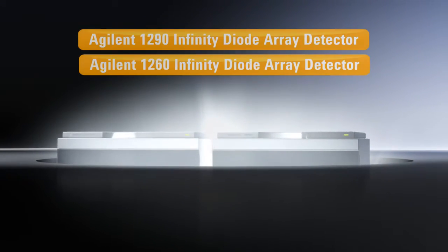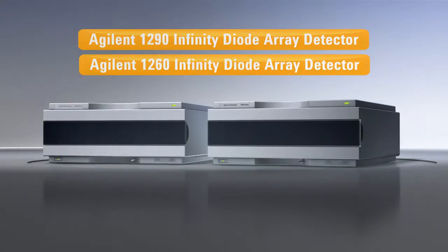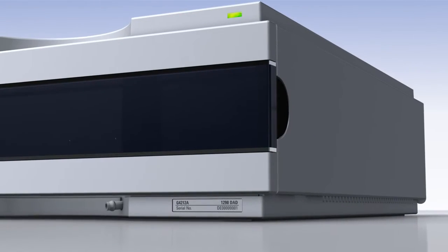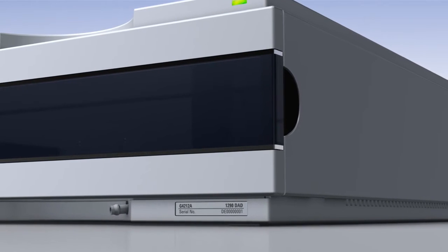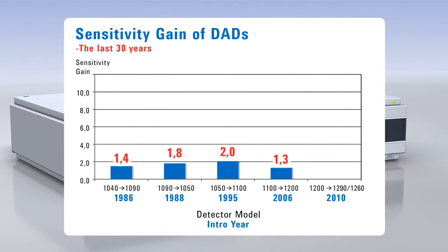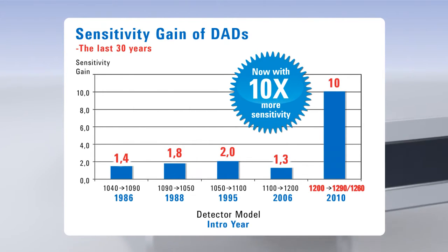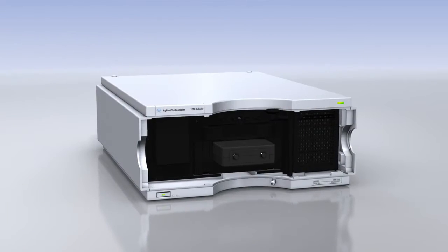The new Agilent 1290 and 1260 Infinity Diode Array Detectors boost your liquid chromatography to a new level of UV detection sensitivity and baseline robustness. They are the world's most sensitive diode array detectors, giving you more than 10 times higher sensitivity than the current market-leading Agilent 1200 Series DAD.